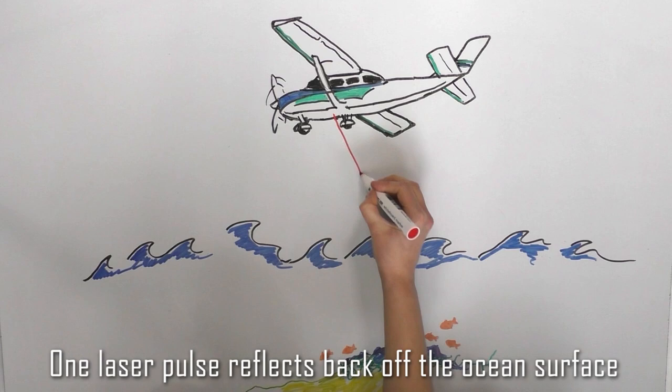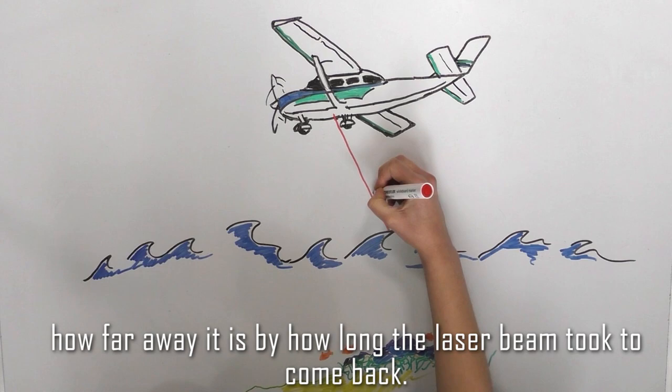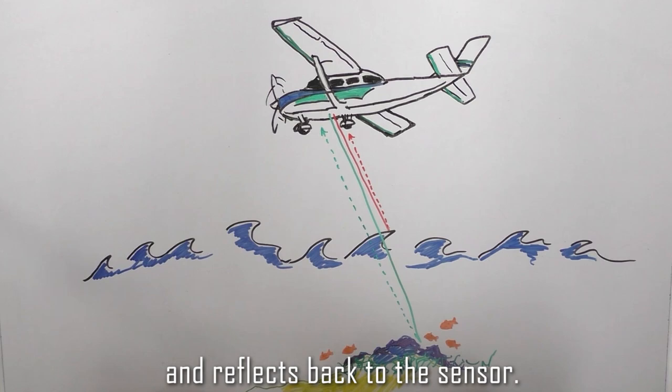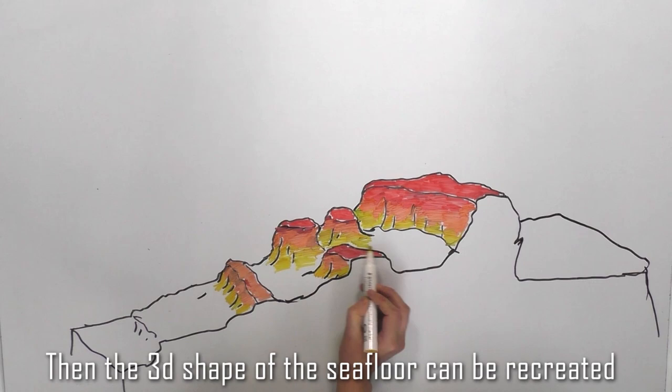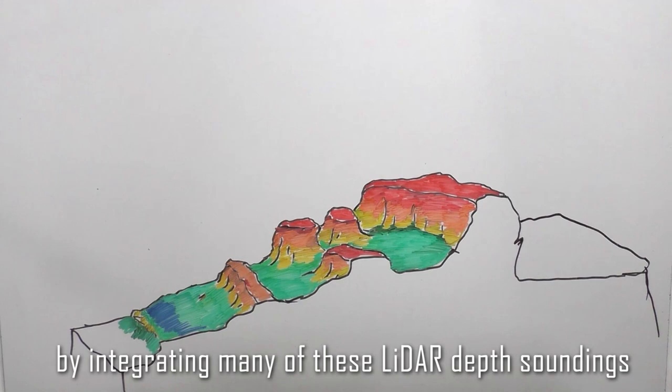One laser pulse reflects back off the surface of the ocean and is picked up by a sensor which can tell how far away it is by how long the laser beam took to come back. A second laser pulse penetrates to the seafloor and reflects back to the sensor. Because we know the speed of light, the time difference between the ocean surface return and seafloor return can help to measure seafloor depth. Then the 3D shape of the seafloor can be recreated by integrating many of these LiDAR depth soundings.